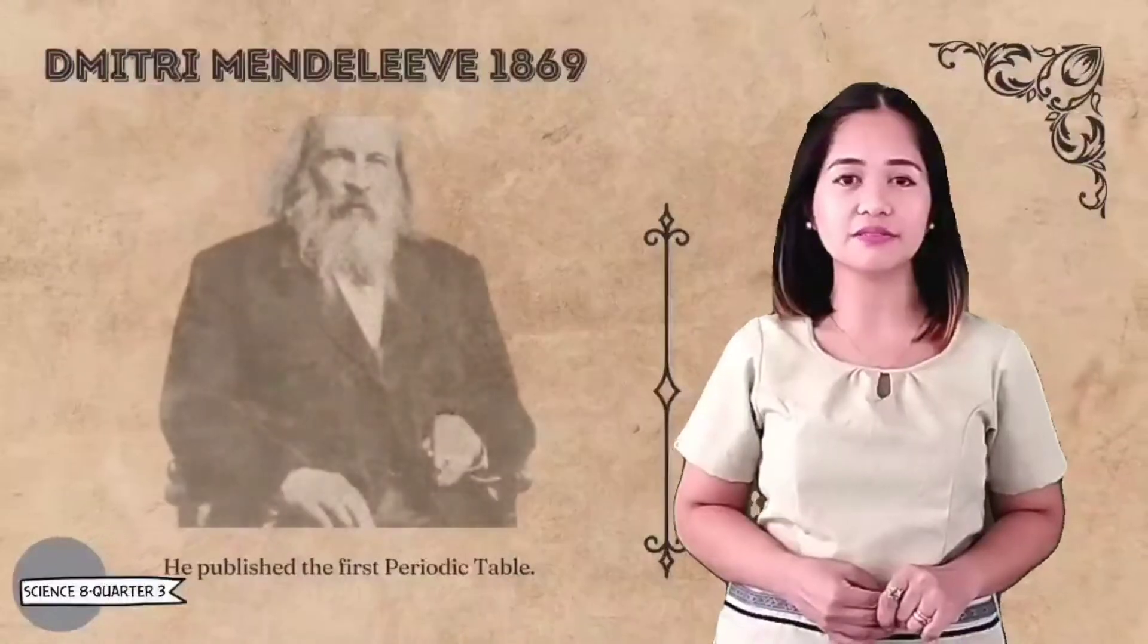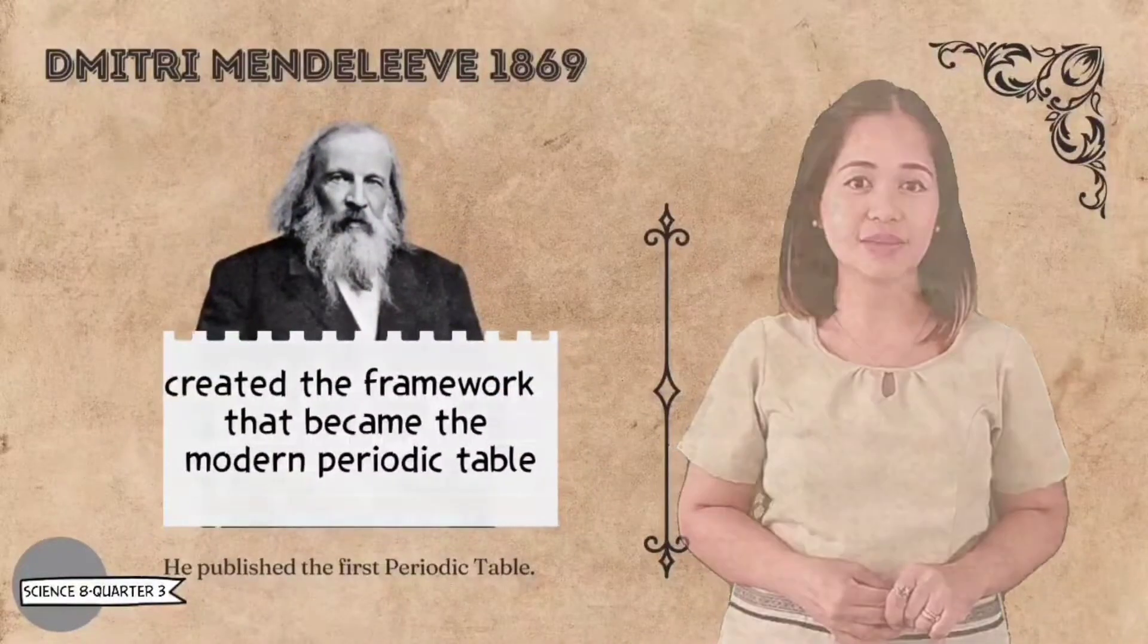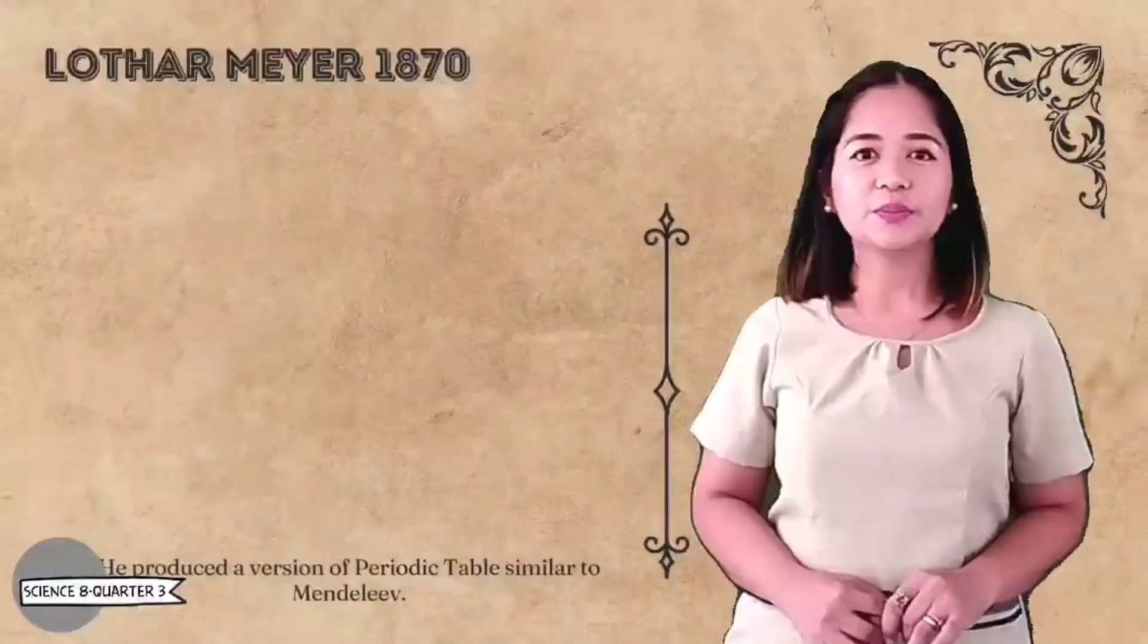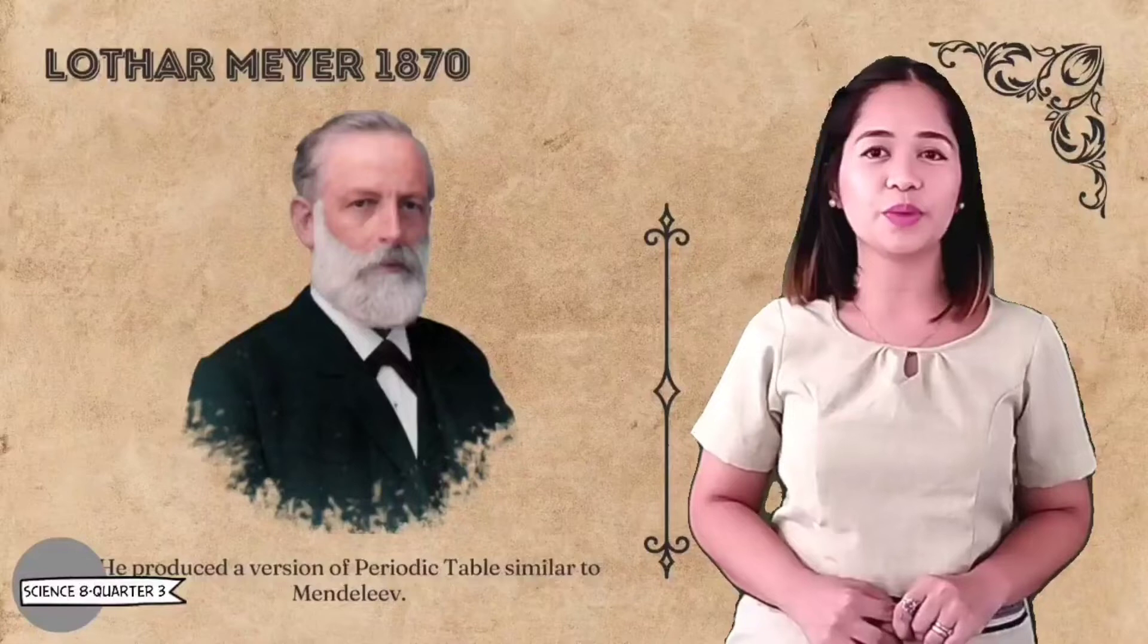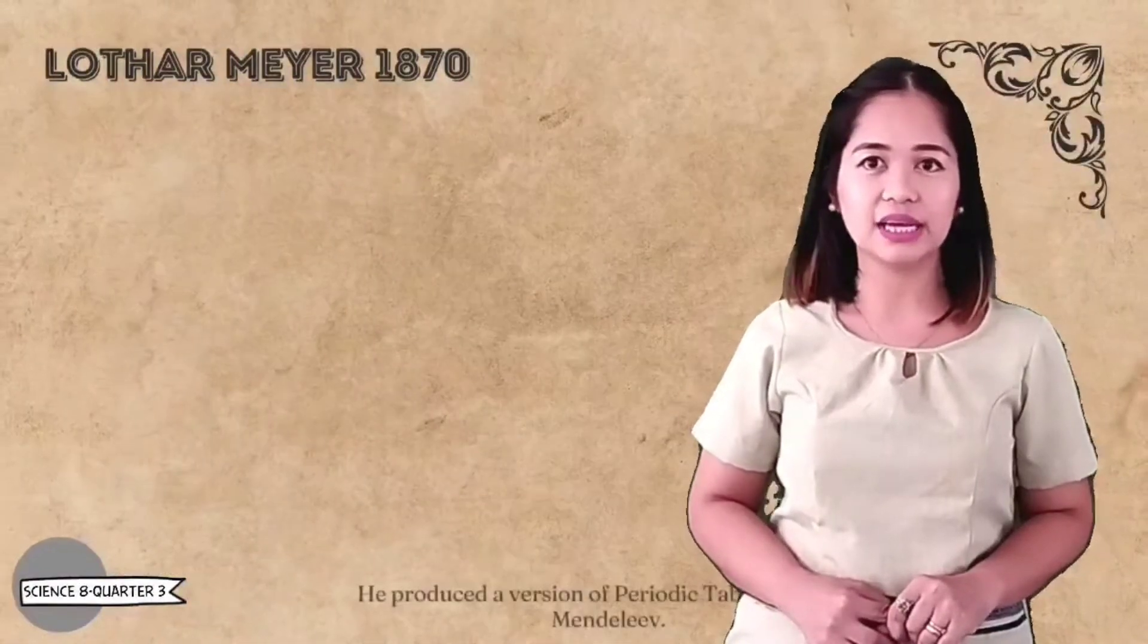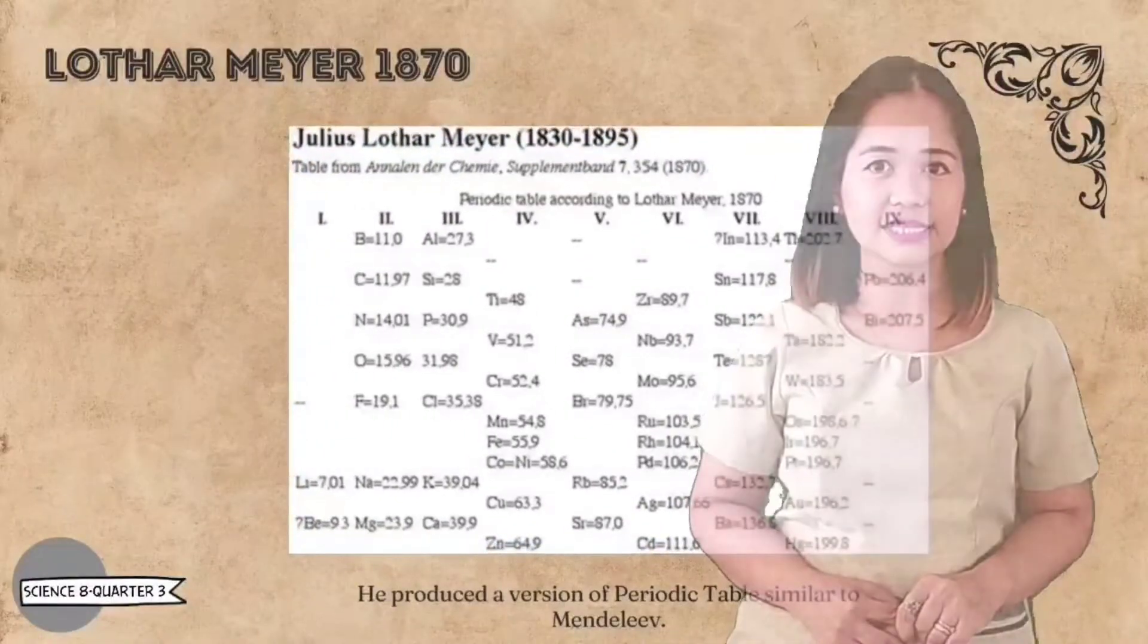In 1869, Russian chemist Dmitri Mendeleev created the framework that became the modern periodic table. Lothar Meyer produced a version of the periodic table similar to Mendeleev's in 1870. He left gaps for undiscovered elements but never predicted their properties.